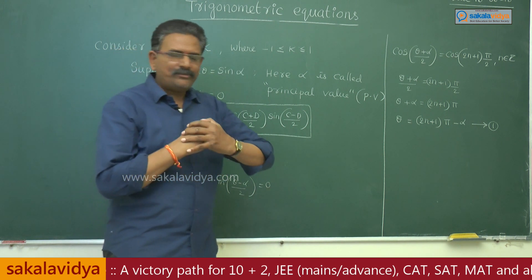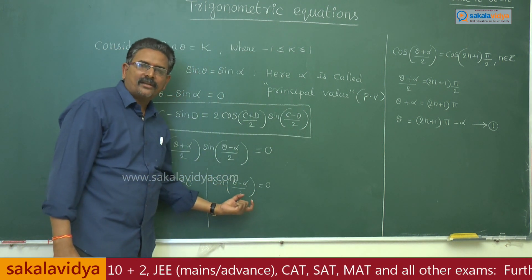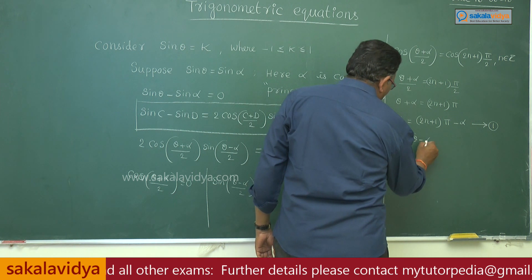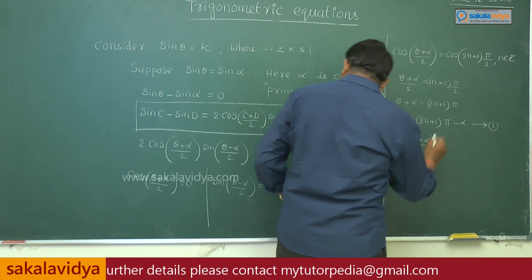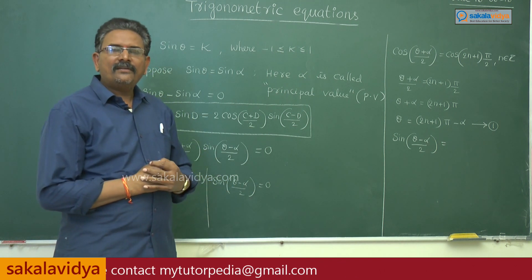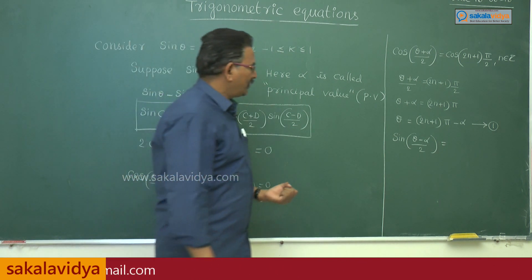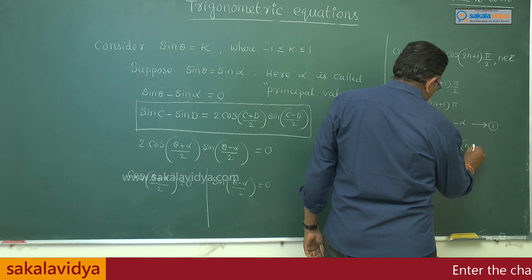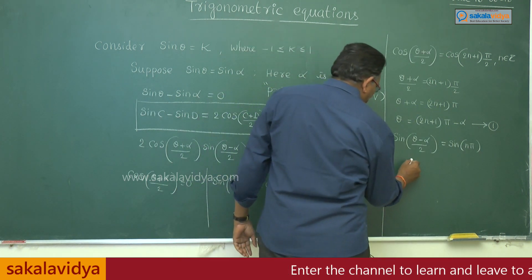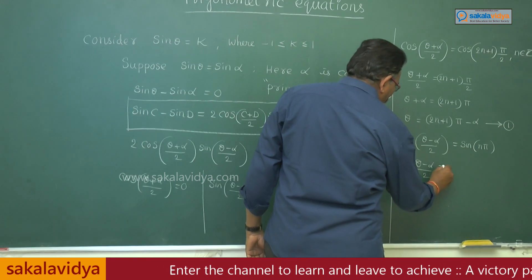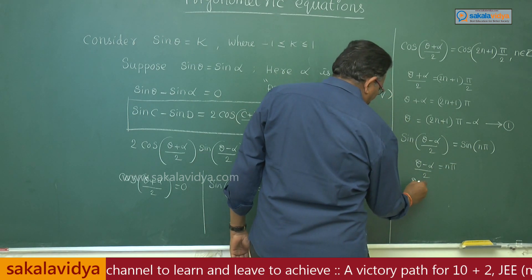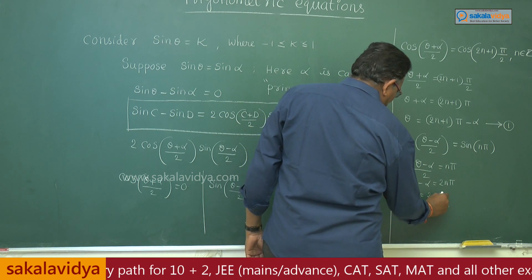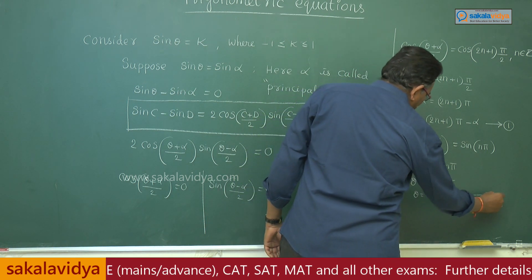For Case 2: sin((θ−α)/2) = 0. We know that sin(nπ) = 0, so (θ−α)/2 = nπ, which gives θ−α = 2nπ. Therefore, θ = 2nπ + α. This is Equation 2.